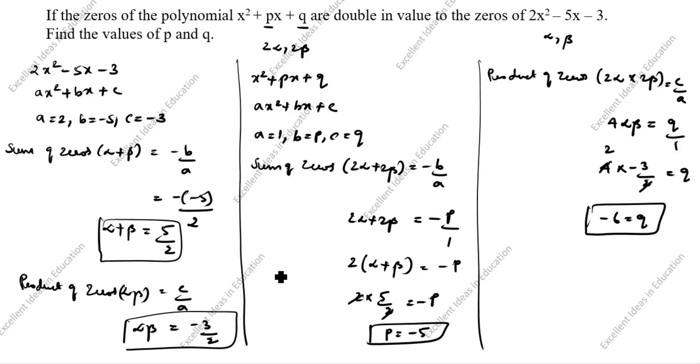Now the value of p is minus 5 and q is minus 6. This is the first method.